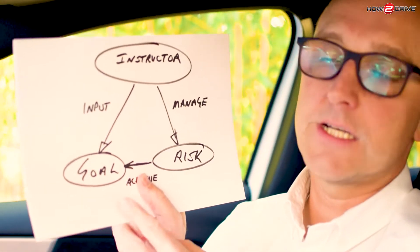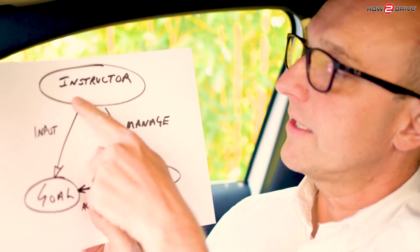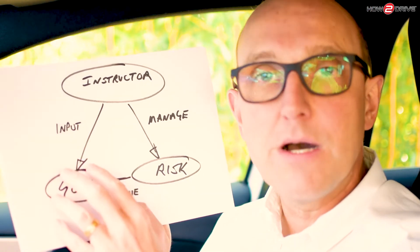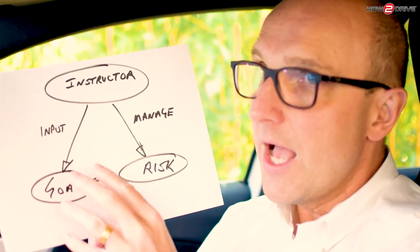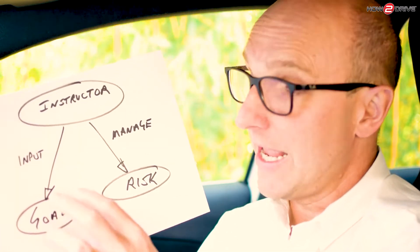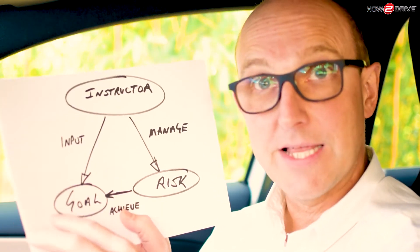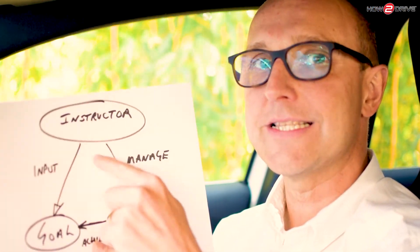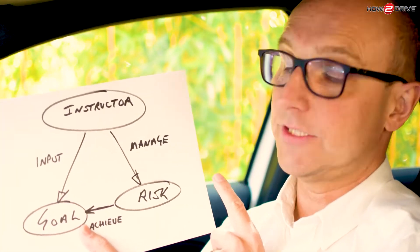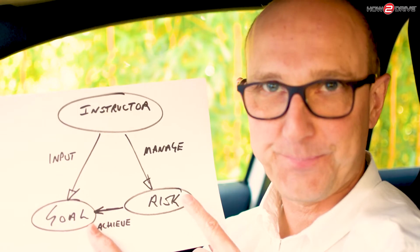Now I want to talk more about the risk side. Let's remind ourselves of the chart: we've talked about the instructor's inputs to achieve the goal, we've talked about SMART objectives and lesson planning and how that relates to the marking sheet. Now we're going to talk about how the instructor manages risk for our pupils.